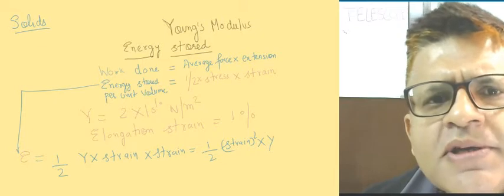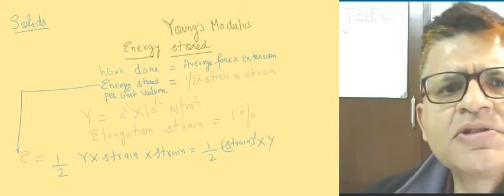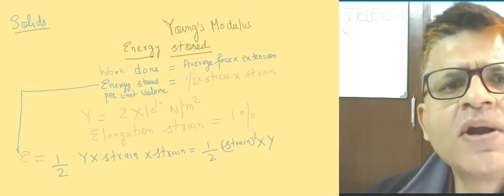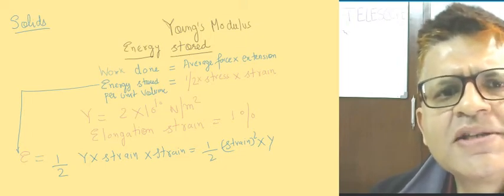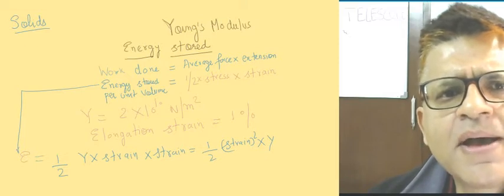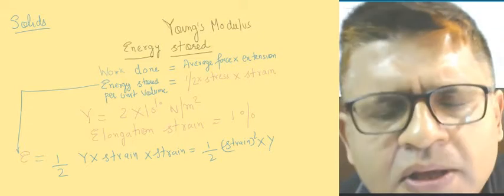If you know the Young's modulus of the wire and the amount of strain produced, in this formula it mentions strain percentage, which means change in length divided by the original length multiplied by 100. That gives you the strain.